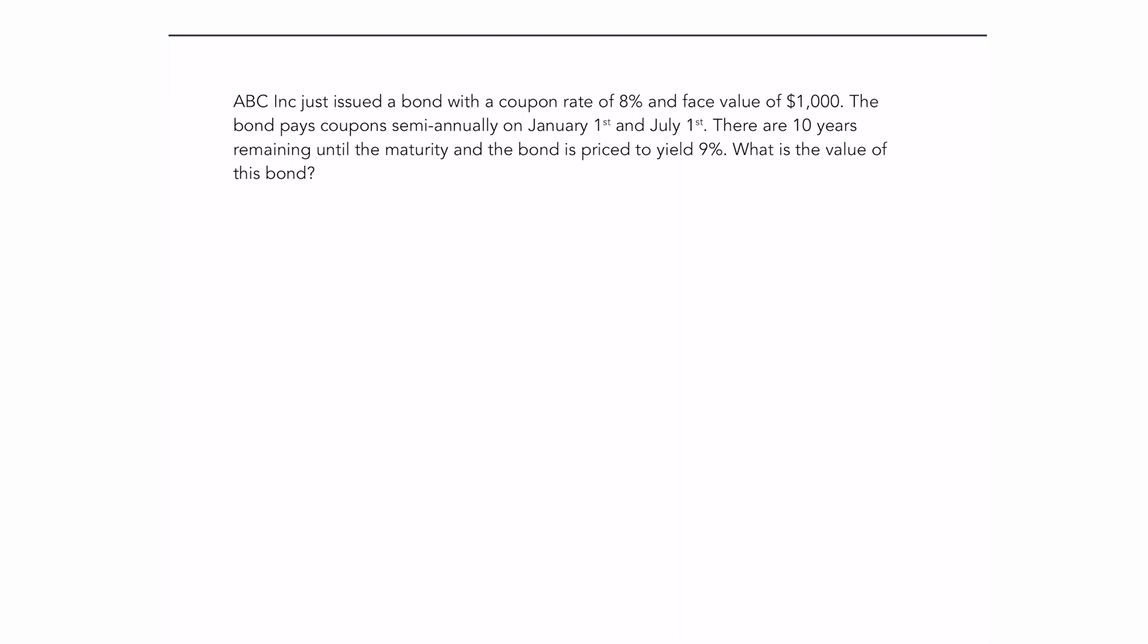So the first thing you're going to need, regardless of which method you choose, is the coupon payment. For the coupon payment, we're going to take the face value and multiply it by the coupon rate. Then we're going to divide it by 2 because the coupons are paid semi-annually. So we've got a payment of $40.